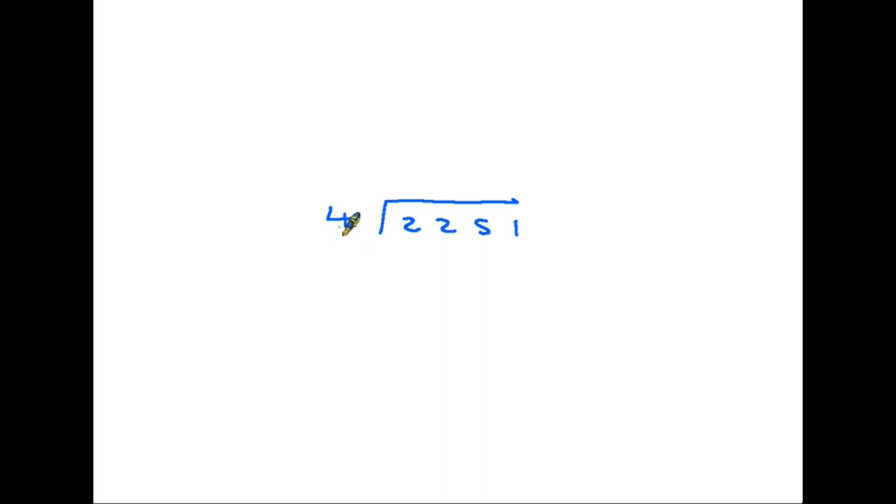So the first question is how many fours are there in 2? And the answer is none. So we're not using any of the 2, so it moves over onto the next column. How many fours are there in 22? Well, the answer is 5. 4 fives are 20. So if 4 fives are 20, we have 22, that means there's 2 left over, so that has to go onto the next column.